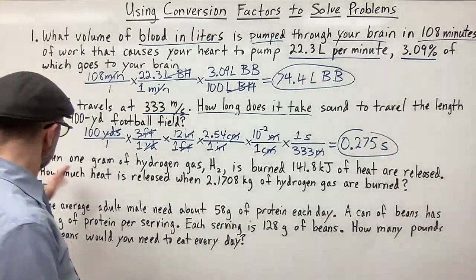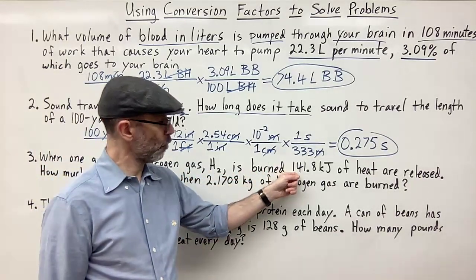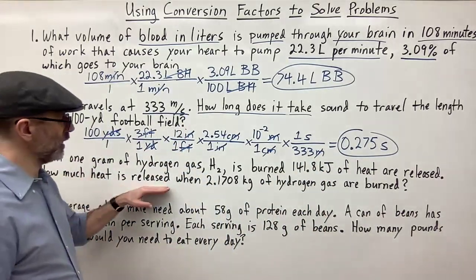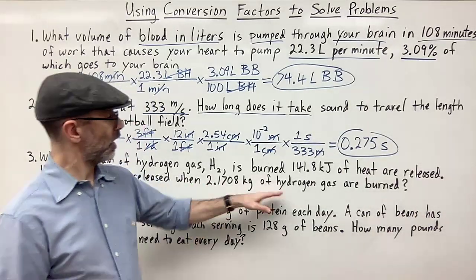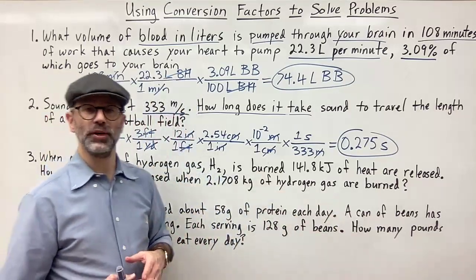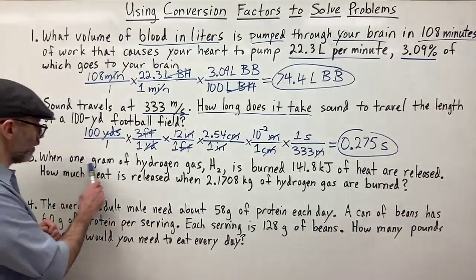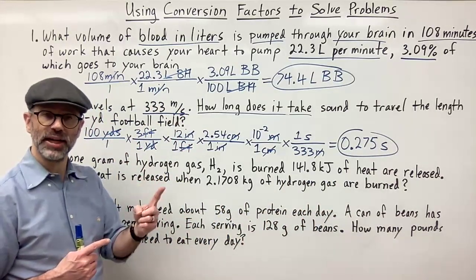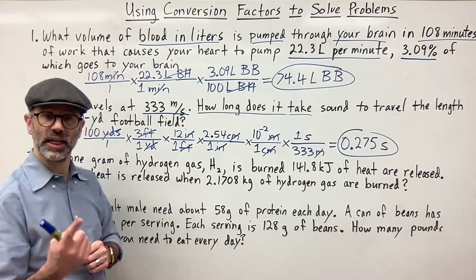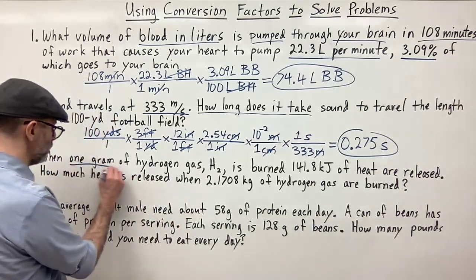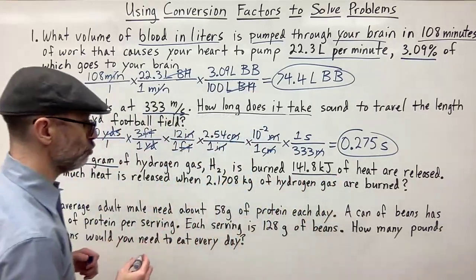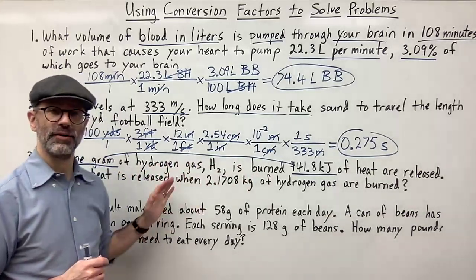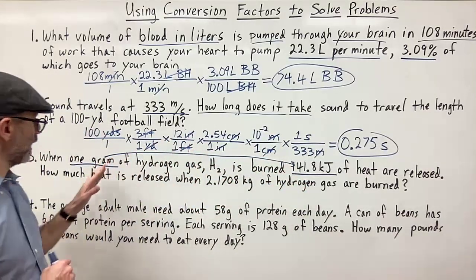Problem number three: when one gram of hydrogen gas (H₂) is burned, 141.8 kilojoules of heat is released. How much heat is released when 2.1708 kilograms of hydrogen gas are burned? First, pull out conversion factors. We're told one gram of hydrogen gas releases 141.8 kilojoules — so we have a relationship between one gram of H₂ and 141.8 kilojoules. We can use that as a conversion factor between kilojoules of energy and grams of hydrogen gas.